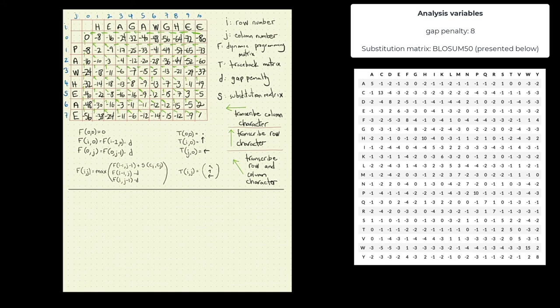At this stage, we are now ready to trace back our matrix and get our highest scoring alignment. The way you do this with Needleman-Wunsch is you start at the bottom right corner and trace back following the arrows.